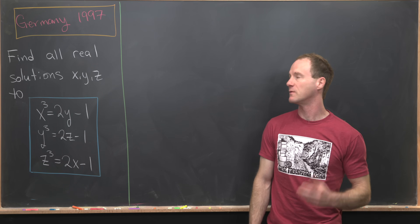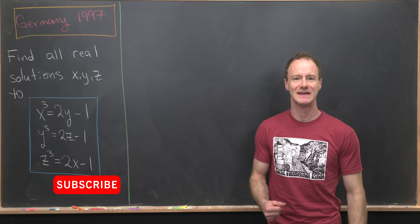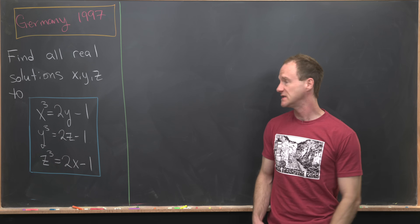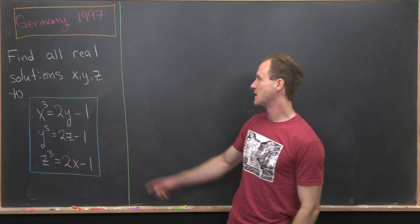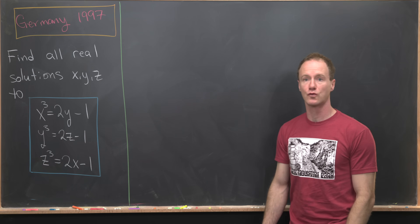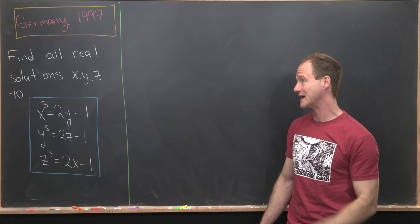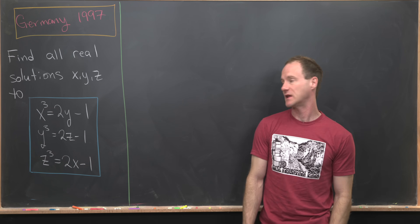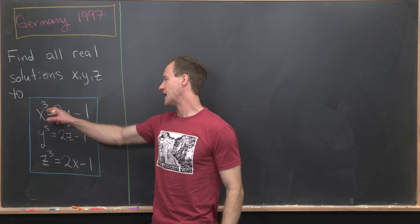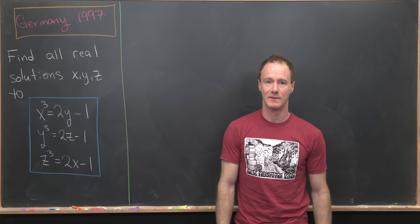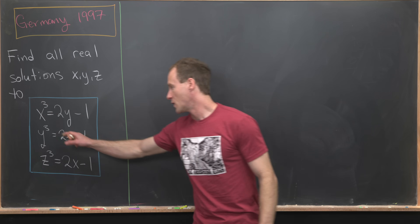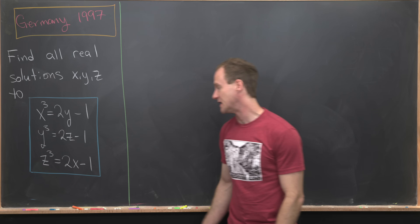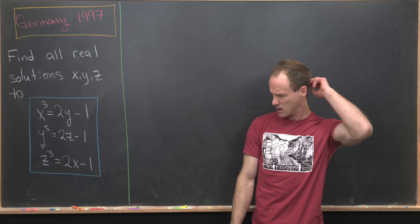Here we're going to look at a nice algebra problem from the 1997 German National Math Olympiad. Our goal is to find all real solutions x, y, z to the following system of nonlinear equations: x cubed equals 2y minus 1, y cubed equals 2z minus 1, and z cubed equals 2x minus 1.